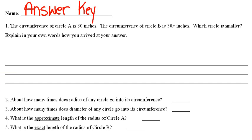Question number one asks you: the circumference of circle A is 30 inches, the circumference of circle B is 30 pi inches. Which circle is smaller? Explain in your own words how you arrive at your answer.